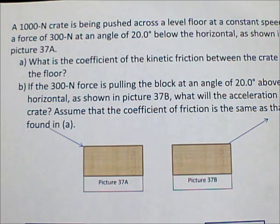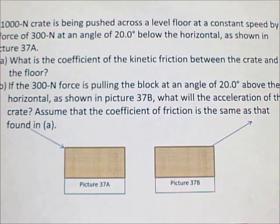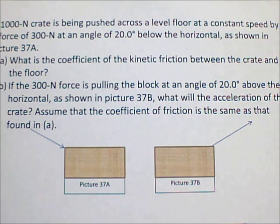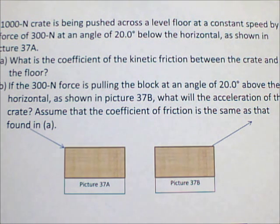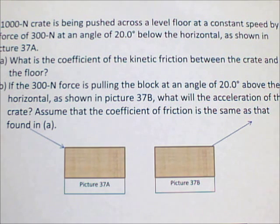Here's the problem. A 1,000 newton crate is being pushed across a level floor at a constant speed by a force of 300 newtons at an angle of 20.0 degrees below the horizontal, as shown in Figure 37A. What is the coefficient of kinetic friction between the crate and the floor?